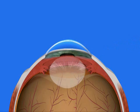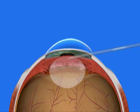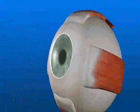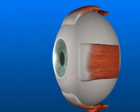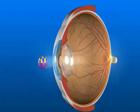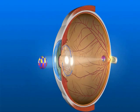A folded lens implant is inserted through the small incision and into the capsule, where it unfolds and permanently takes the place of the clouded natural lens. With the cataract removed, the new lens implant clearly focuses light rays onto the retina. The power of the lens implant is selected for your individual eye.